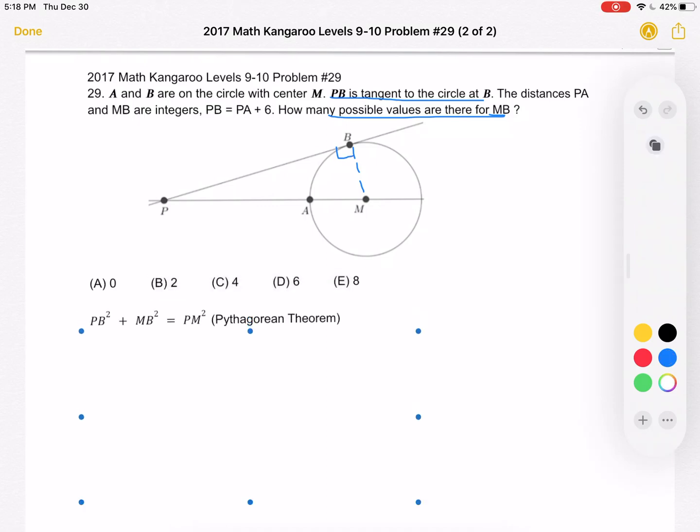Because we have a right triangle, we can use the Pythagorean theorem and write that the leg PB squared plus the leg MB squared is equal to the length of the hypotenuse PM squared.